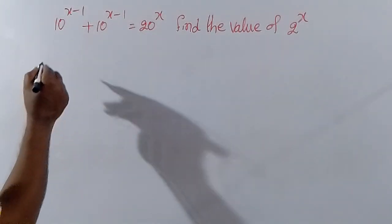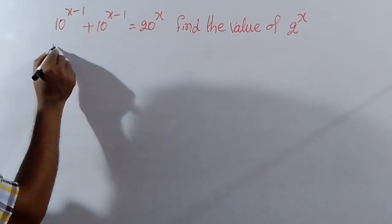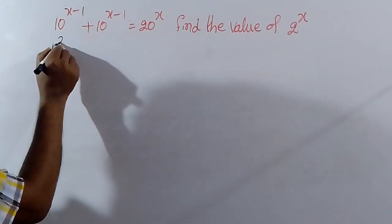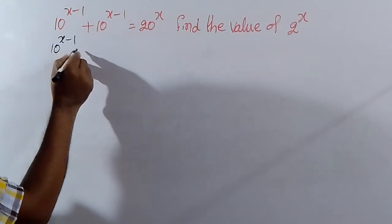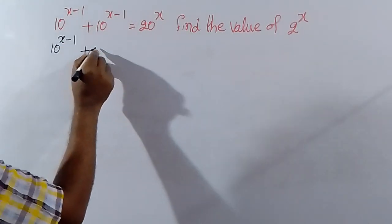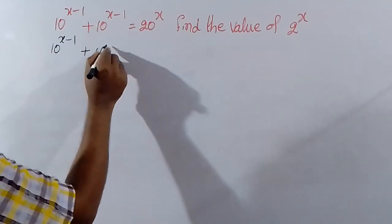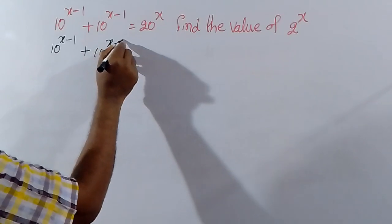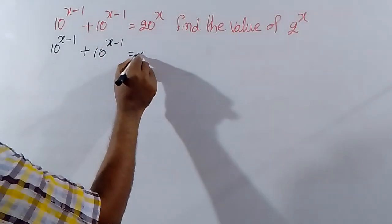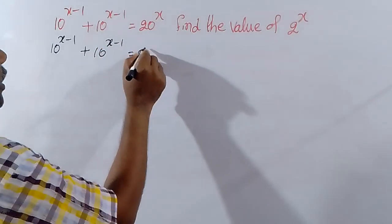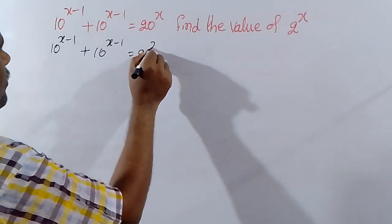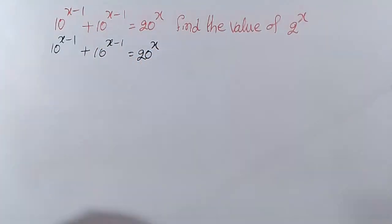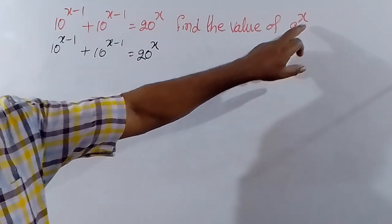What is given in the question? We have 10 power (x minus 1) plus 10 power (x minus 1) equal to 20 power x. Then, find the value of 2 power x.